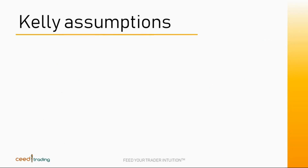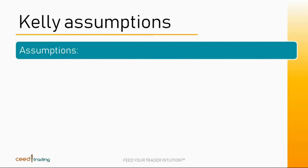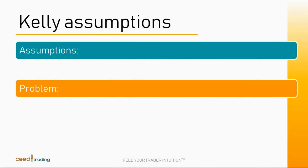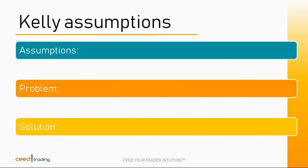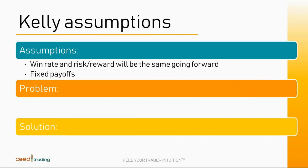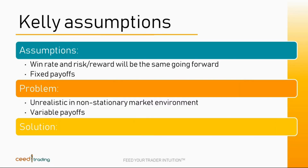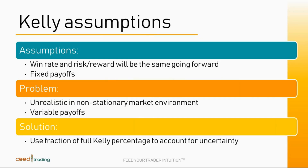The Kelly formula has some limitations that we need to consider. First of all, it assumes that the win rate and the reward over risk will be the same going forward. The problem is that this is unrealistic in a non-stationary market environment in which the sequence and magnitude of positive and negative trades is uncertain. We need to adjust for this uncertainty by using a fractional percentage approach to minimize the risk of ruin. Let's look at some sample calculations in Excel to see how we could integrate the Kelly percentage into our own trading strategies.